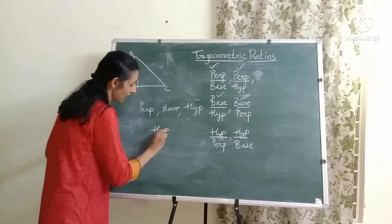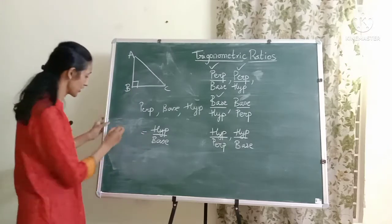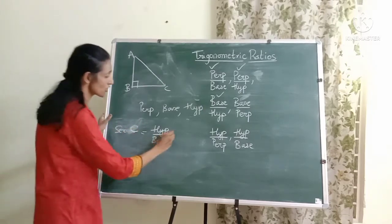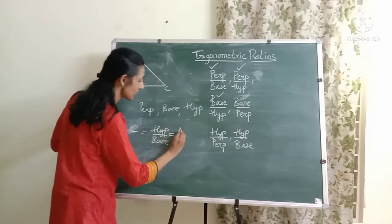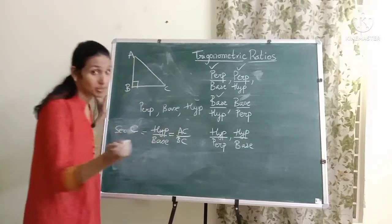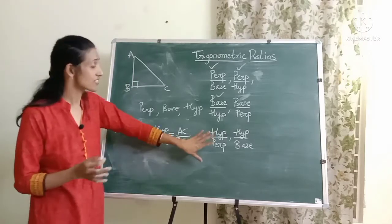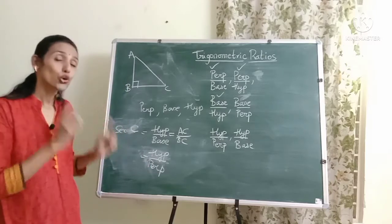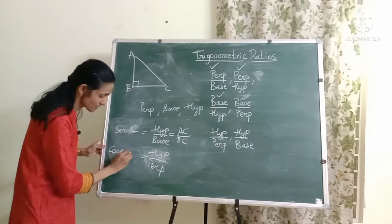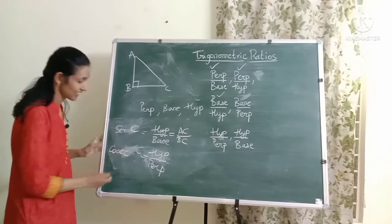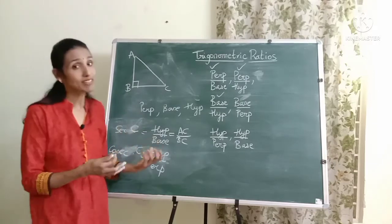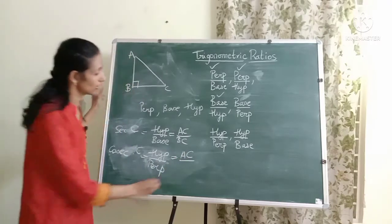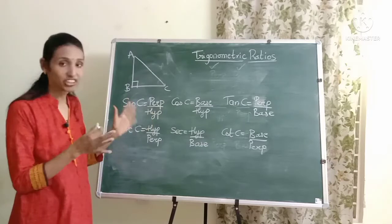The fifth ratio is hypotenuse upon base, called the secant ratio — short form sec. So sec C equals hypotenuse upon base, which is AC upon BC. The sixth and final ratio is hypotenuse upon perpendicular, called the cosecant ratio — short form cosec. So cosec C equals hypotenuse upon perpendicular, which is AC upon AB.